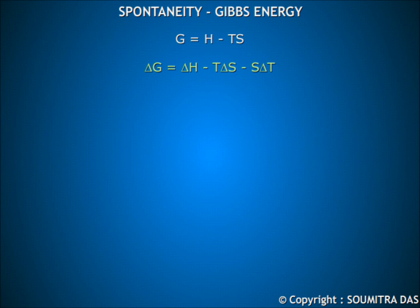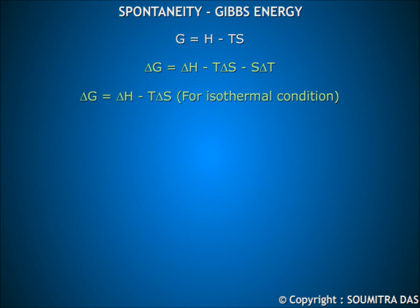Delta G equals delta H minus T delta S minus S delta T. For an isothermal process, delta G equals delta H minus T delta S. If delta G is less than zero, then the process is spontaneous; otherwise it is not.